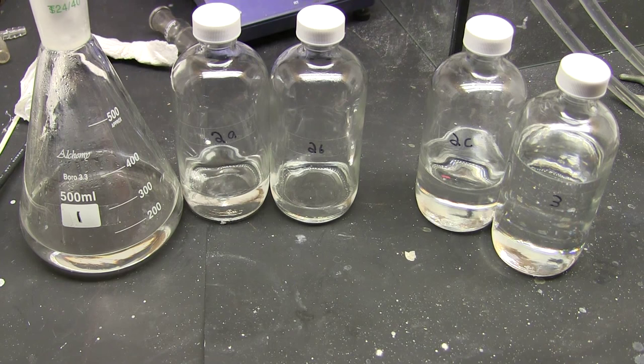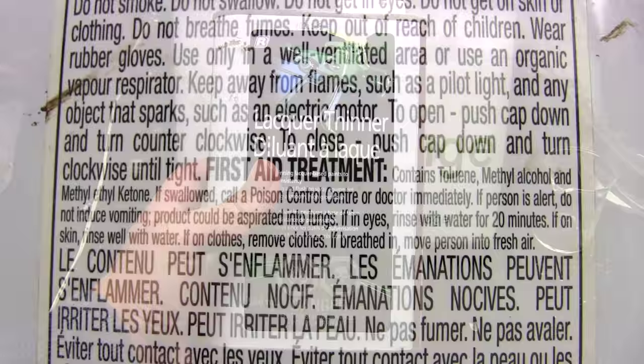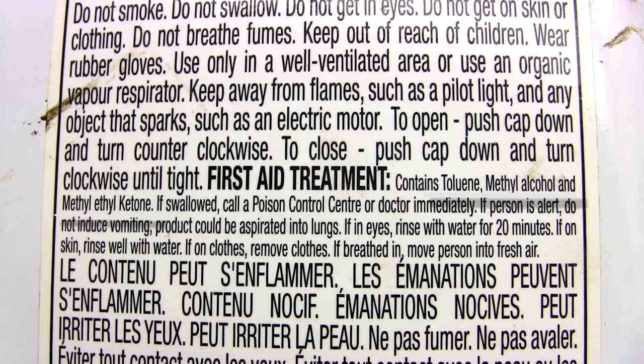Greetings fellow nerds. I need some toluene for my lab and in the past I was able to buy it directly as paint thinner. But now I can't find a purer source and all I could get was this lacquer thinner that claims to contain toluene mixed with methanol and methyl ethyl ketone.